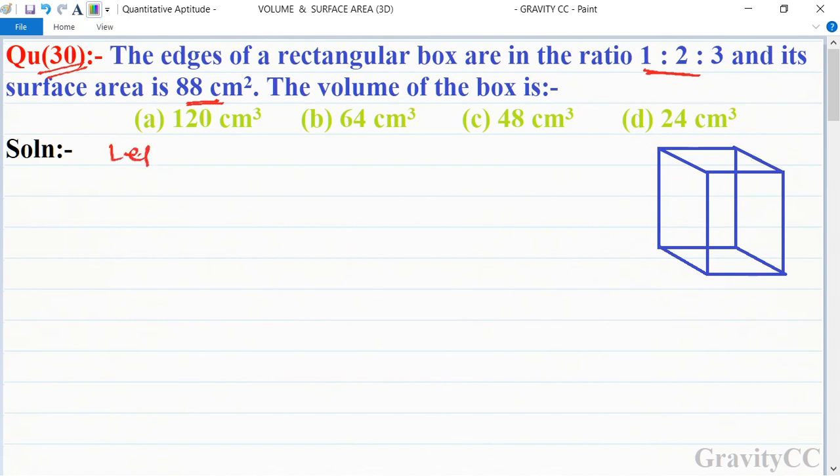So first of all, we let length is equal to x, and breadth is equal to 2x, and height is equal to 3x. And surface area of box is given 88, and we know that the formula surface area is equal